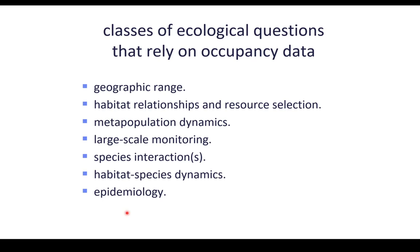Occupancy is also extremely useful for species interactions — presence or absence of different species allows you to potentially infer something about species interactions and competition structures. And there are relationships between habitats and different species. The one I tacked on here, because it's clearly relevant for our current circumstance, is epidemiology: an individual is either occupied by the pathogen or it isn't. A patch occupancy model is exactly what you want. The proportion of patches — i.e., the proportion of hosts occupied by the pathogen — is prevalence. Unfortunately, the epidemiological community has been a little slow on the uptake, largely because they don't take courses motivated by wildlife modeling technologies, but I suspect given current circumstances the interest will increase significantly.